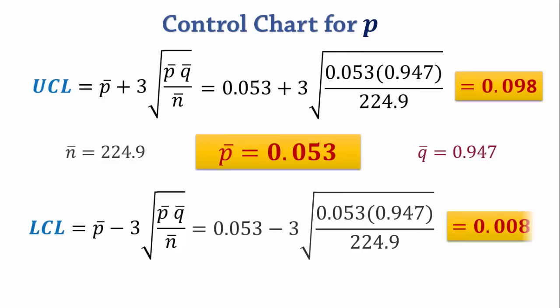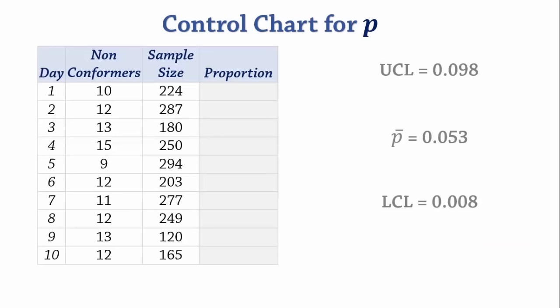Now that we have the control limits, we can go ahead and calculate the proportions. The proportion of non-conformers for day 1 is 10 divided by 224, which gives 0.045. We do the same for days 2 to 10.